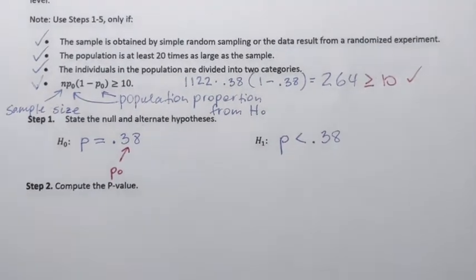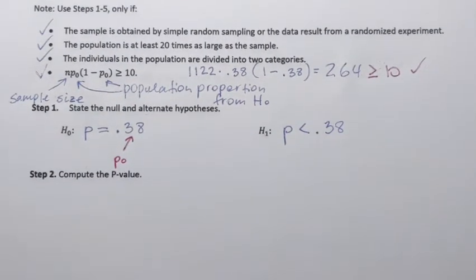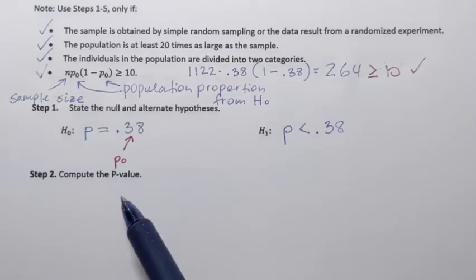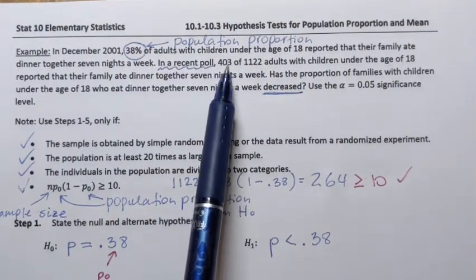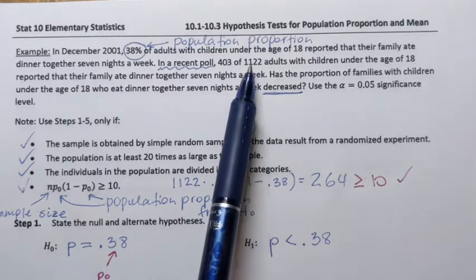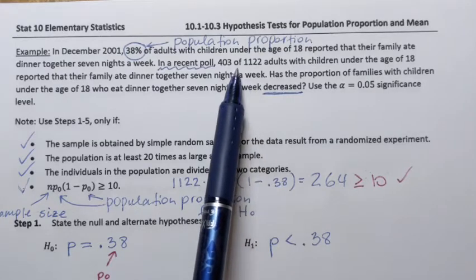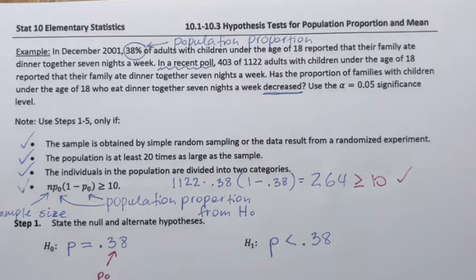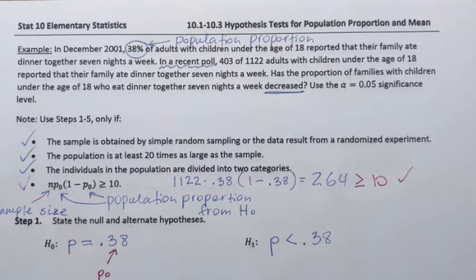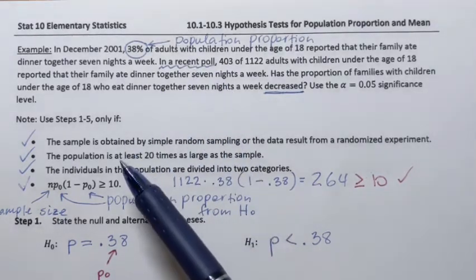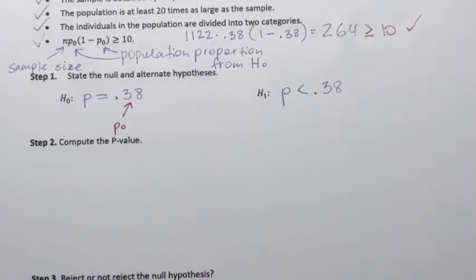Next, we'll need to compute the p-value. The p-value is the key number in hypothesis testing when using the p-value approach. It represents the probability of how likely it is to obtain a sample in which 403 adults out of 1,122 eat dinner together with their family seven days a week, or an even more extreme sample, from a population that has 38% of adults eating dinner with their family seven nights a week. I will show how to find the p-value using the calculator.